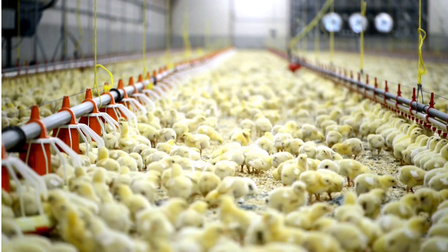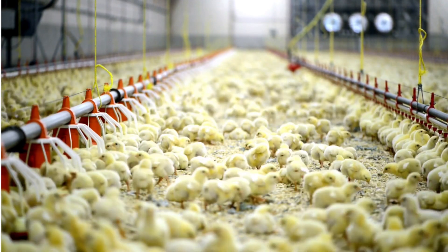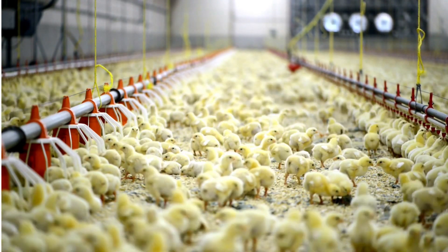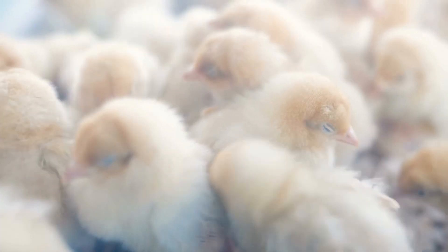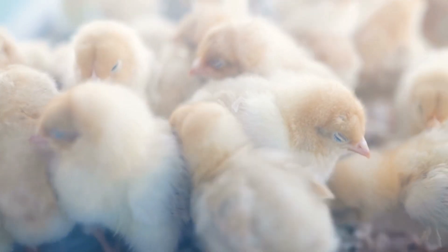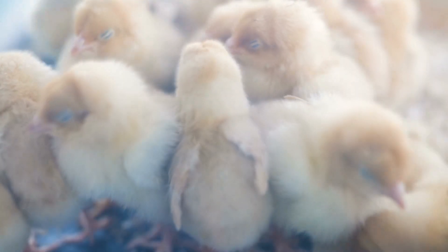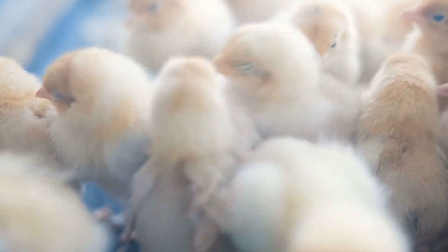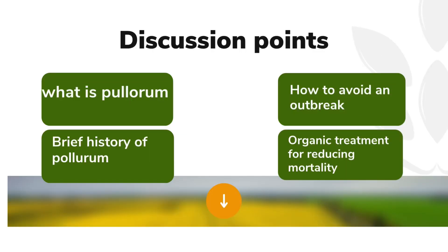Today we will be talking about a disease of grave economic importance, which is salmonella. Salmonella in poultry can be regarded as two types of infections. The first, which is of primary importance, is for public health. Salmonella is a sickness that can affect both poultry and humans, but we will be focusing on how salmonella affects poultry.